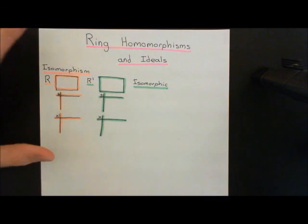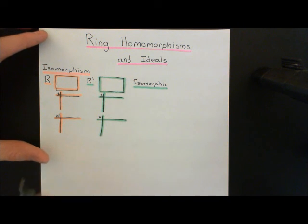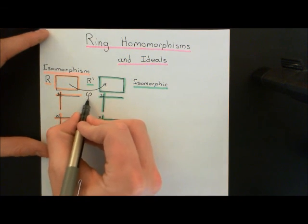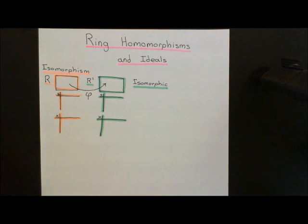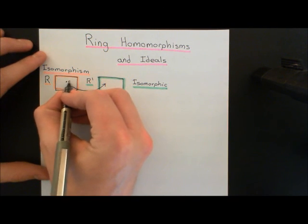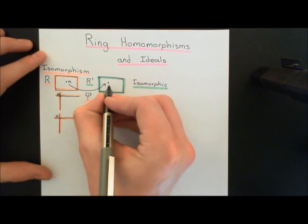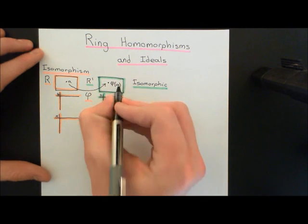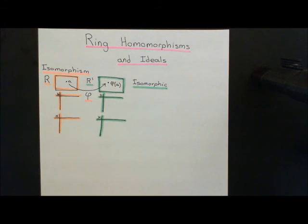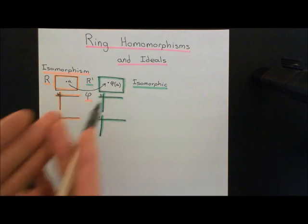If these two rings are isomorphic — the same ring but for the fact that you've used different symbols in the second one — then there should exist a mapping, a relabelling mapping called an isomorphism, which we'll call phi. It's going to take all the elements in our first ring, so here is an element A, and map it onto some element in the second ring, which we'll call phi of A.